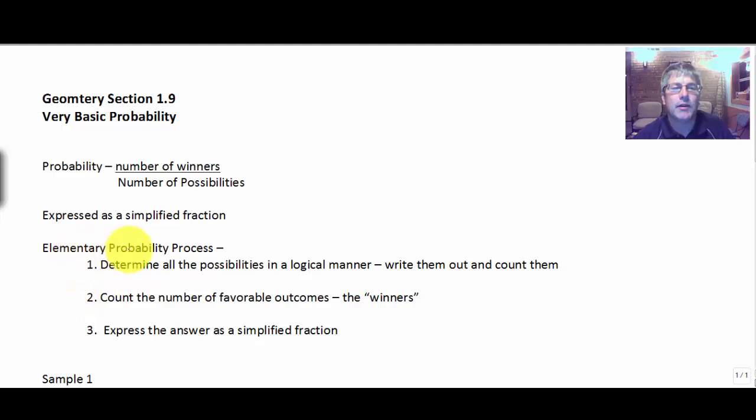So the elementary probability process is really three steps. The first thing we want to do is determine all the possibilities in a logical manner. Probably the easiest way to do this is to simply write them out in a systematic, orderly way. One person may do this differently than another. They both may be valid, but you have to be systematic in how you do it so you don't duplicate things or leave things out. And I encourage you to write them out and then count them. How many possibilities do you have? That's your denominator of your probability.